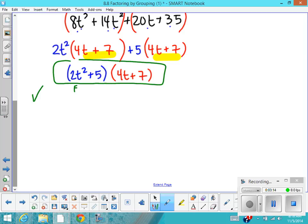So this is my answer. And then down here I'm going to do a little bit of a check using FOIL. Let's go first terms, and you get 8t³. Then we're going to go outside terms and you get 14t².